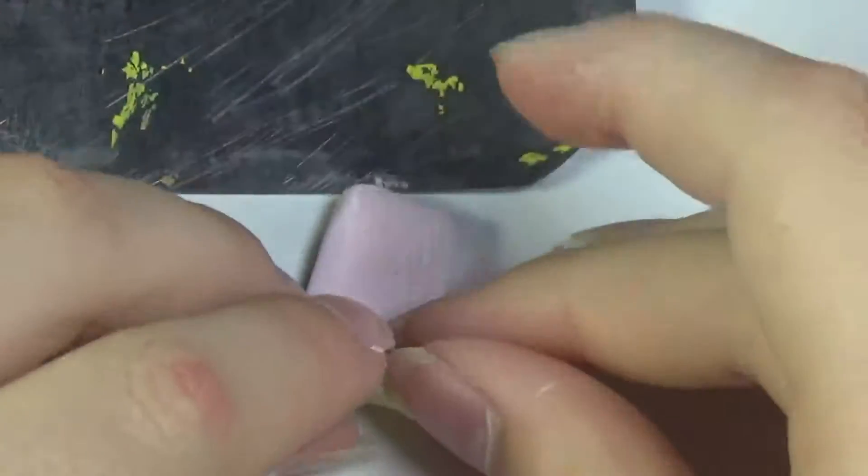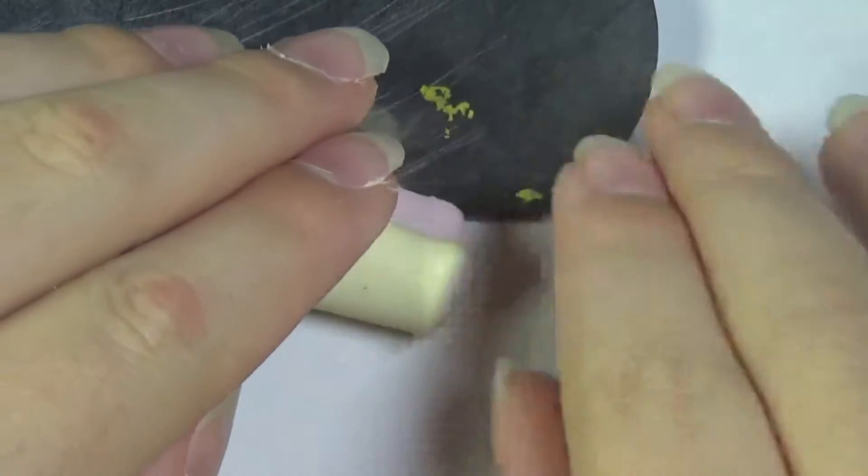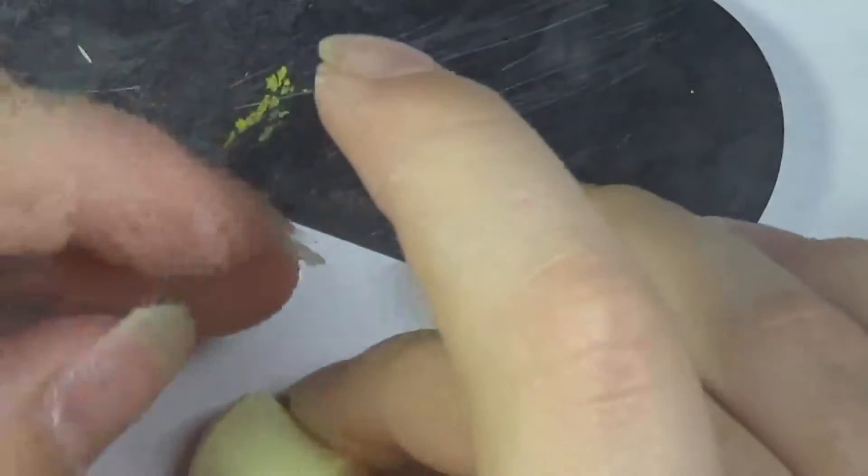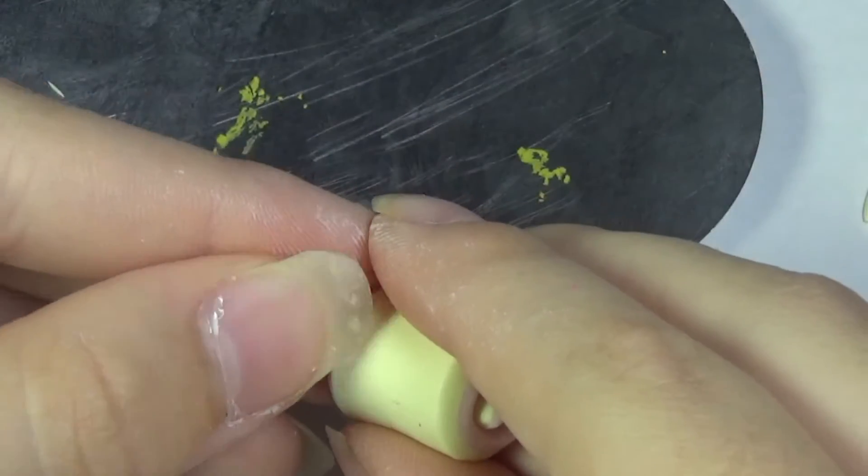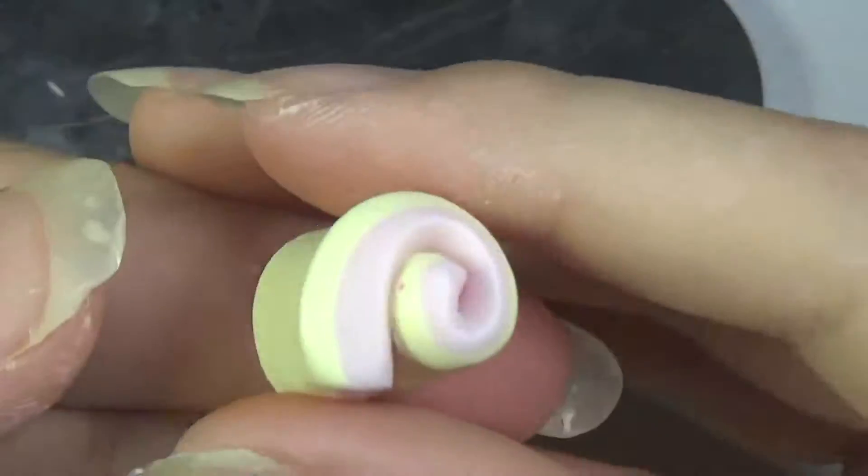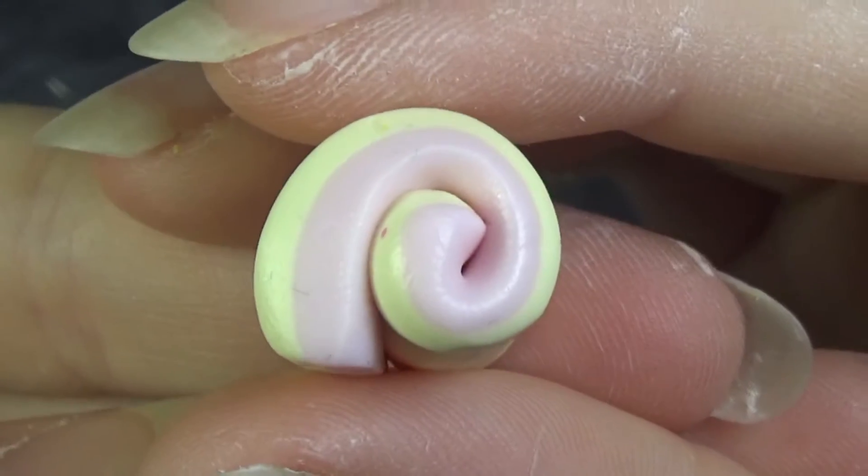So once I was done with that, I went ahead and rolled it up and put it into the fridge for about 10 minutes to make sure it wouldn't flatten on me when I cut into it. So go ahead and do that.